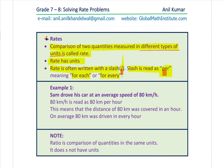Let's take an example to understand this concept. Sam drove his car at an average speed of 80 kilometers per hour. You understand now the rate? Kilometers — that slash is read as 'per hour'. So when we have Sam drove his car at 80 kilometers per hour, this slash means 'per'.